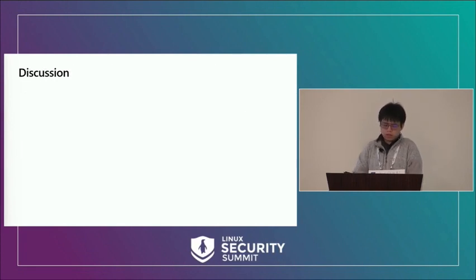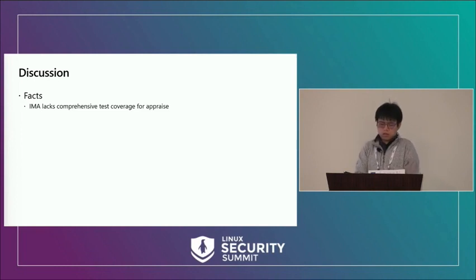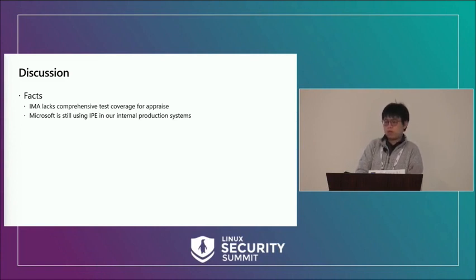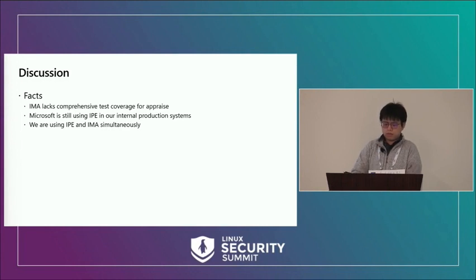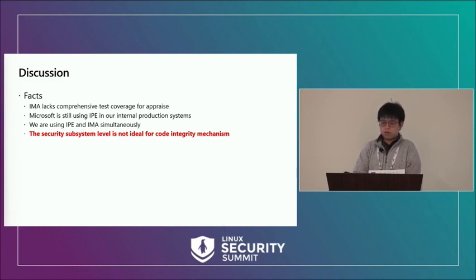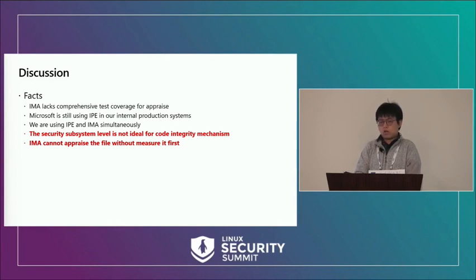Starting the discussion: as far as we are aware, IMA doesn't have comprehensive tests for appraise, so continuing to extend it may break existing features — and without tests, we don't know what changes will cause breakage. Microsoft is still using IPE in our internal production system daily. We use IPE and IMA simultaneously — IPE only for code integrity, IMA only for measurement. The security system level is not ideal for integrity mechanisms as it can be easily defeated; DM-verity at the block device level and FS-verity at the file system level are two good examples of better code integrity mechanisms.